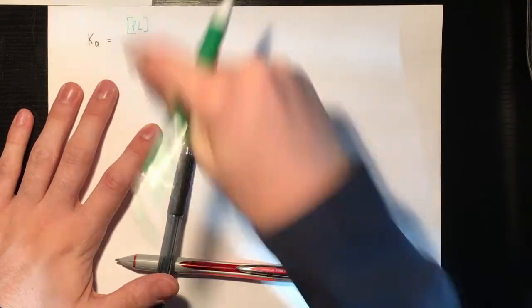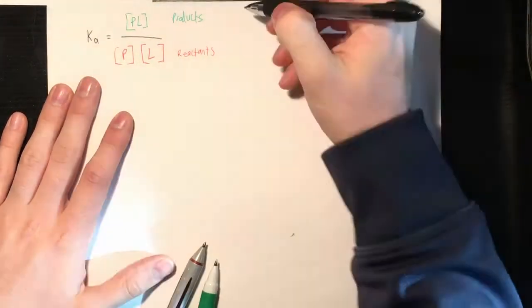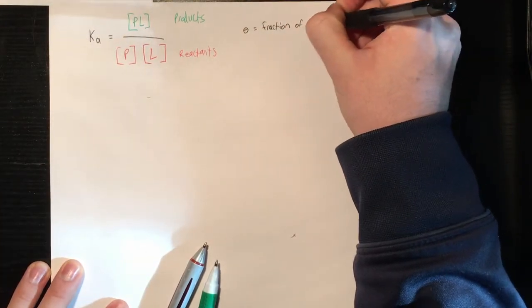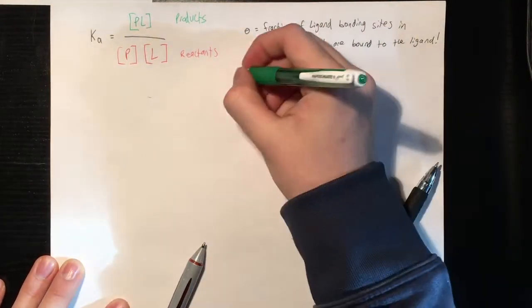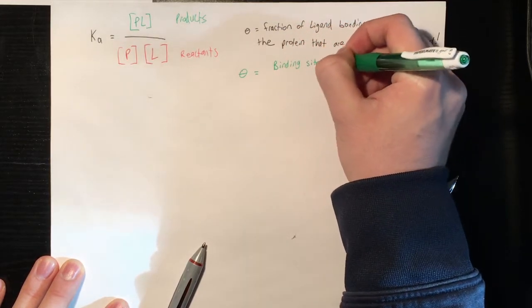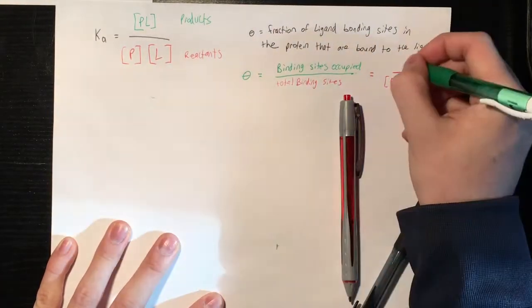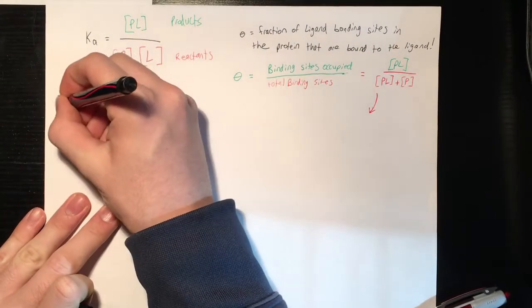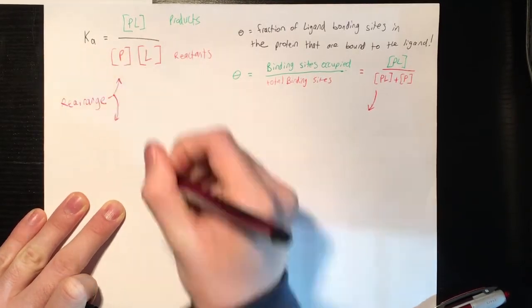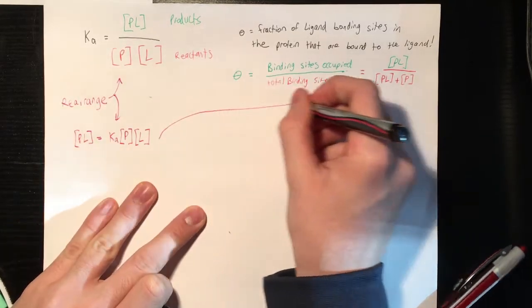So for your forward reaction, your equilibrium constant Ka is equal to your products over your reactants, which is the concentration of your protein ligand complex divided by the concentration of your ligand individually. So this kind of relates to theta, which is your fraction of the binding sites that are occupied, which is equal to the concentration of your protein ligand complex divided by the concentration of that complex plus the concentration of your protein by itself. And so you can relate these two by rearranging the equilibrium equation to solve for the PL rather than the Ka. And you get that PL equals Ka times the concentration of P times the concentration of L.